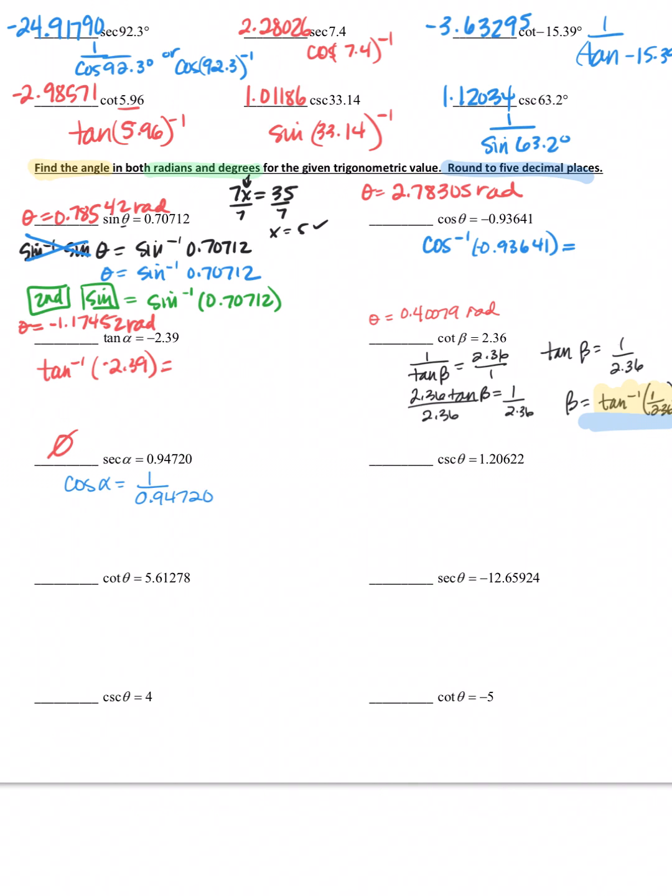Let's look at the next one. Cosecant - what would I do here? I would put in inverse sine of 1 over 1.20622. That's what I need to put in my calculator. When I did it in radian mode, I got 0.97738.